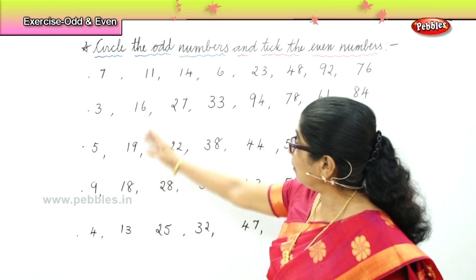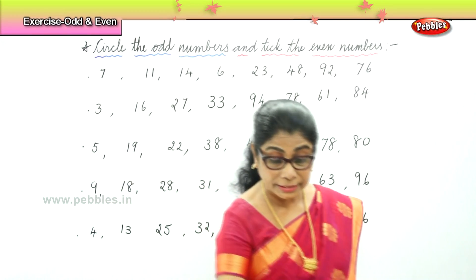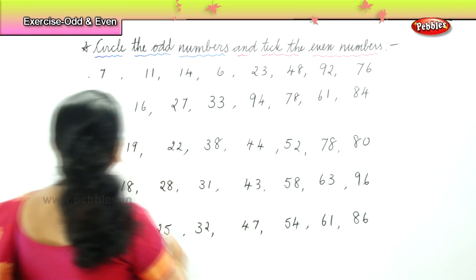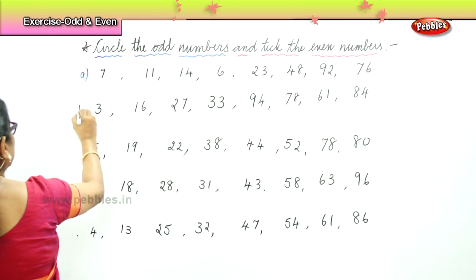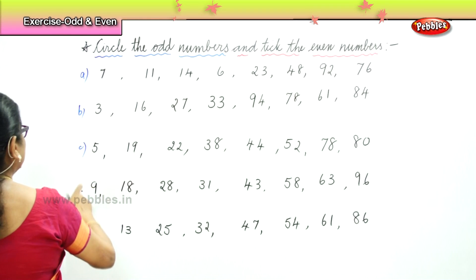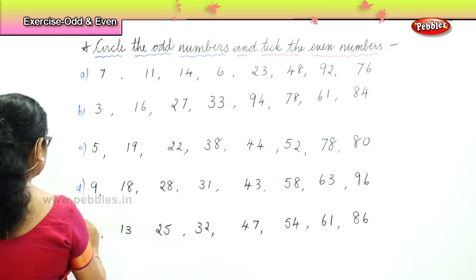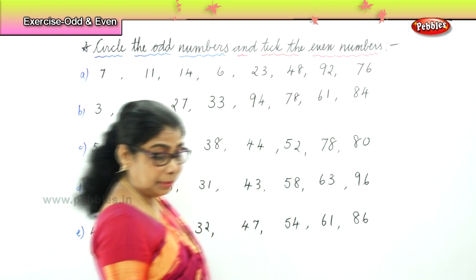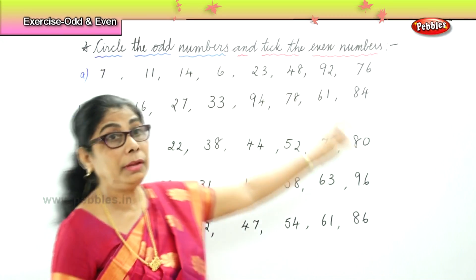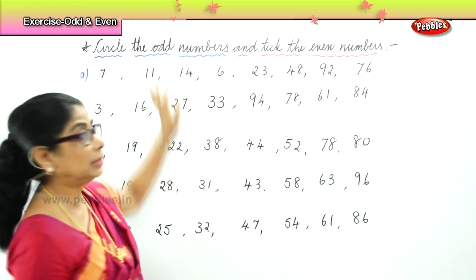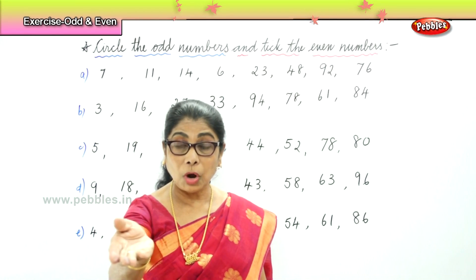Now I have one, two, three, four, five sets of numbers here — A, B, C, D, E — five sets of numbers at random. Now what are we going to do? We are going to circle all the odd numbers. What are odd numbers? Call out odd numbers: one, three, five, seven, nine.